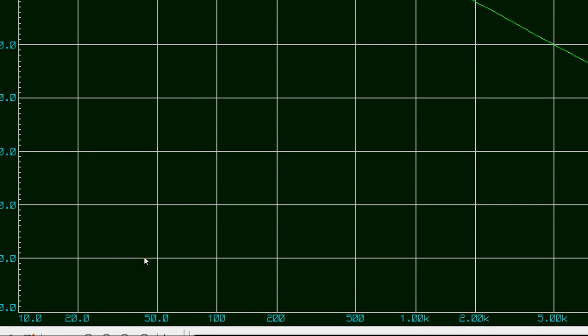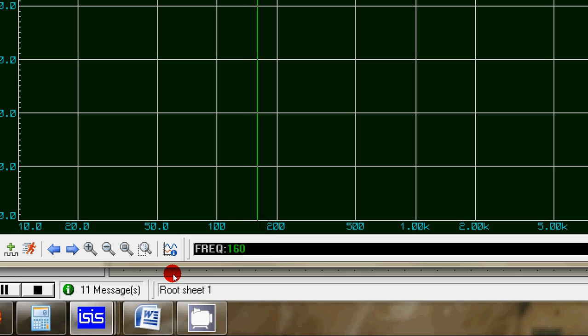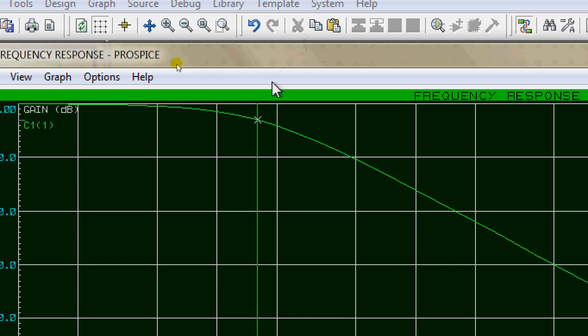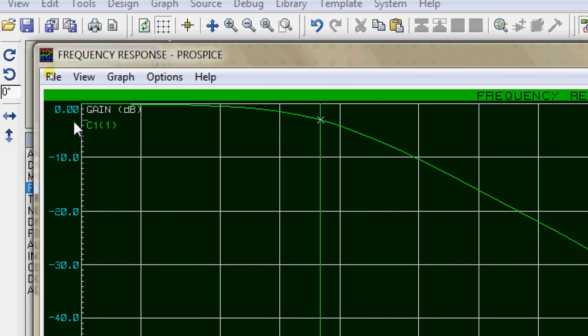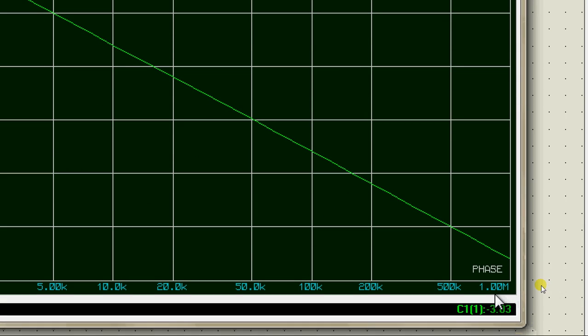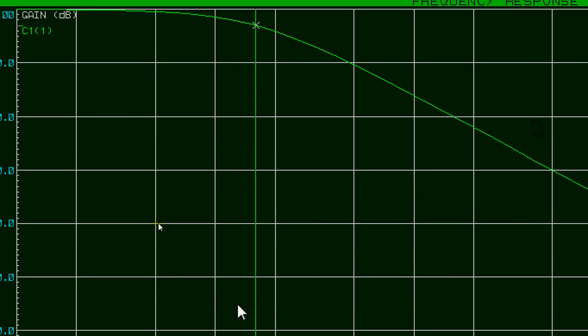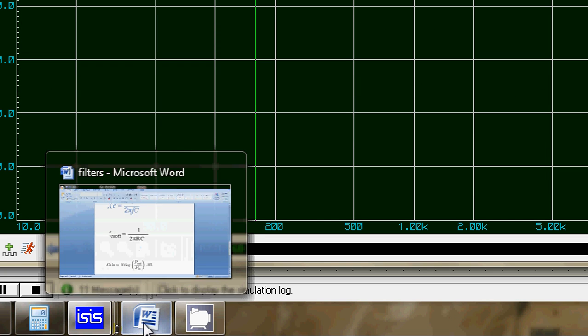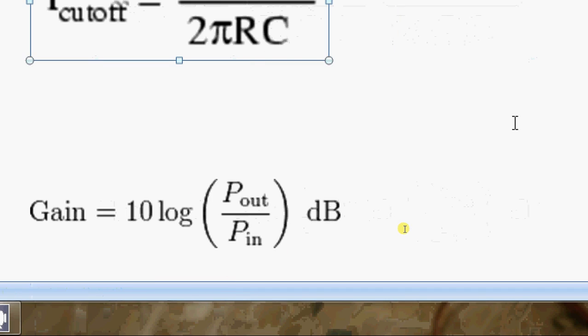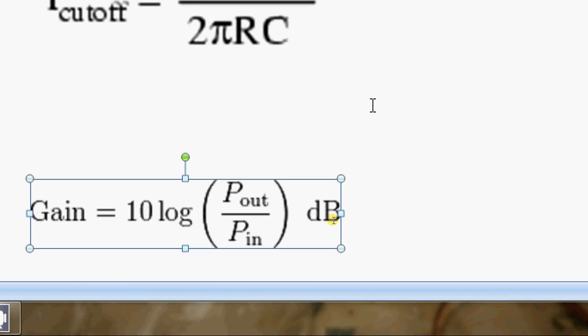Now let's expand this graph and try and find 160 hertz. Yeah, and the gain corresponding to this value is approximately minus 3 decibels. Now this value is unique because what it means is the power has fallen by exactly half.